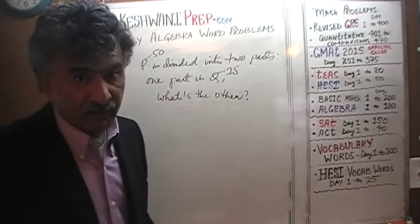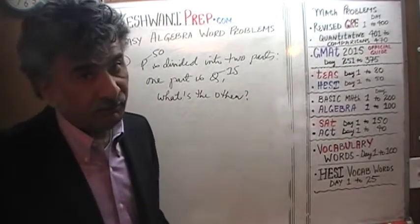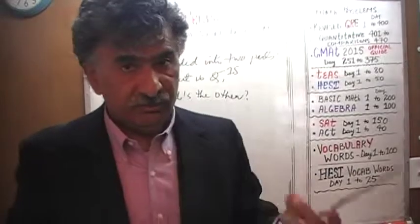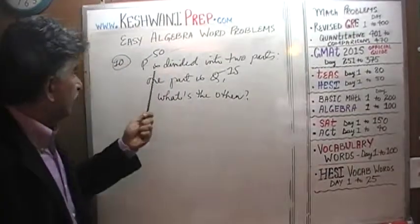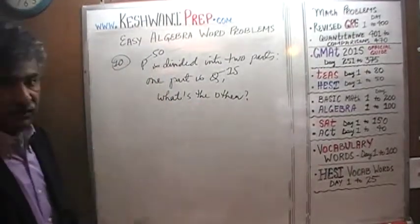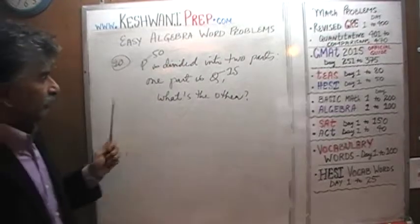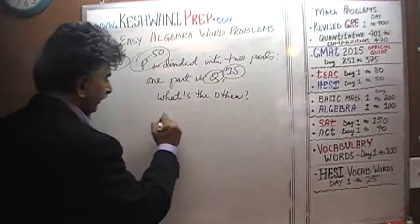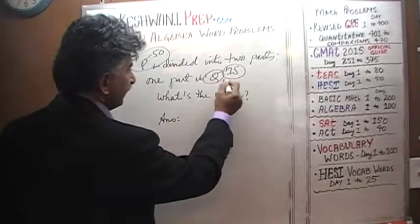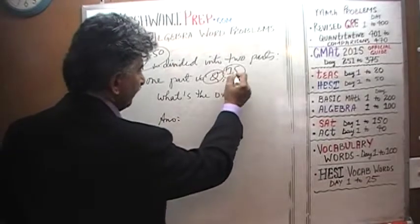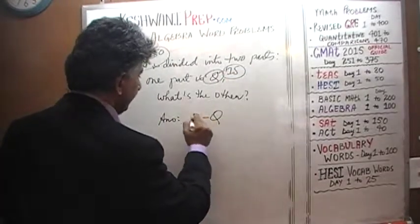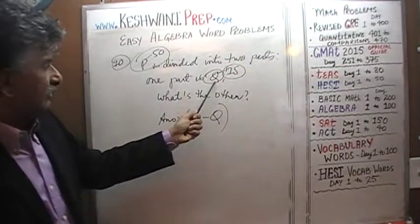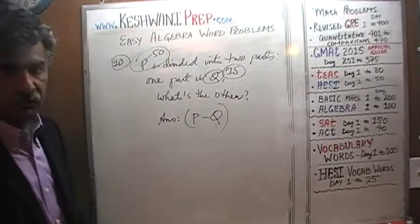The question is how did we find 35? With the arithmetic problem it's so simple — we found 35 by subtracting 15 from 50. By subtracting 15, which is our Q, from 50. The answer is: subtract Q from P. If P is divided into two parts and one part is Q, the other part must be P minus Q.